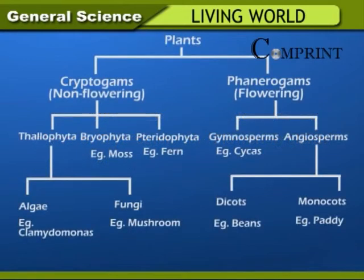Plants are divided into cryptogames and phanerogames. Cryptogames are divided into Thallophyta, Bryophyta (example: moss), and Pteridophyta (example: fern). Thallophyta is further divided into algae (example: Chlamydomonas) and fungi (example: mushroom).